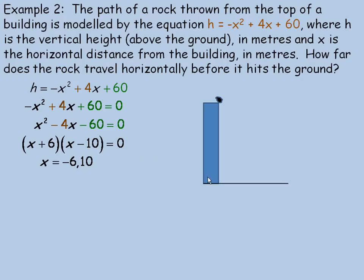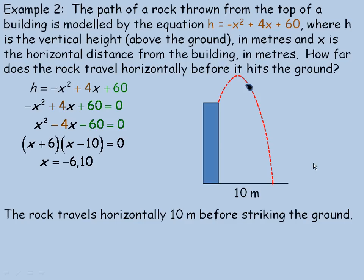The negative distance is not applicable to this problem — we discard x equals negative 6 because we are interested in how far from the building the rock lands. The rock travels horizontally 10 meters before hitting the ground. The negative 6 could theoretically represent a position 6 meters to the left of the building if the parabolic path were extended, but the relevant answer here is 10 meters.